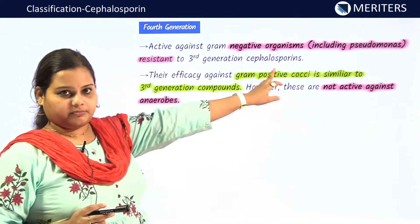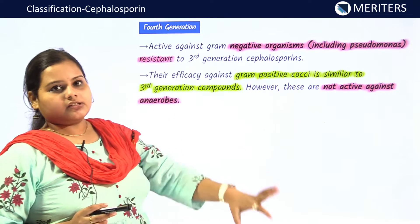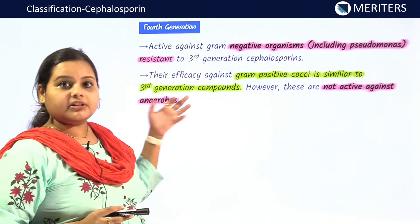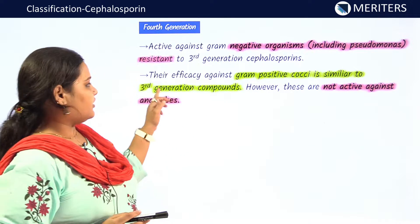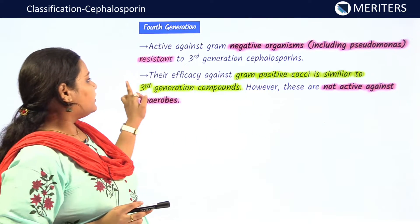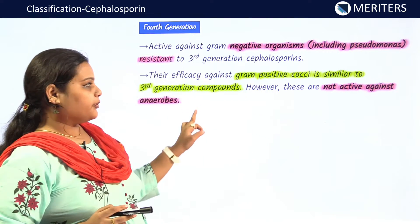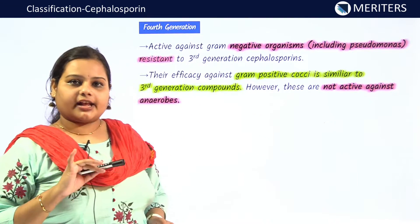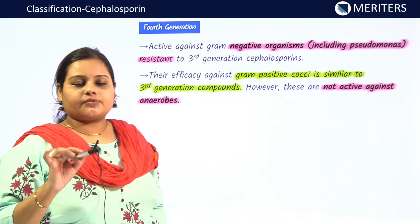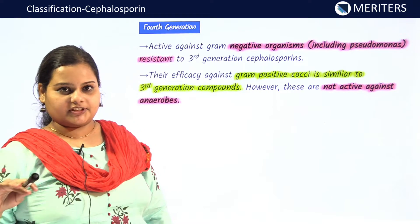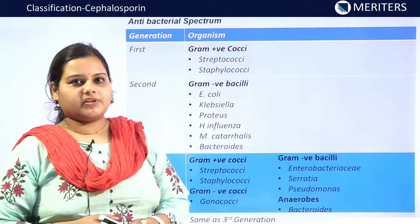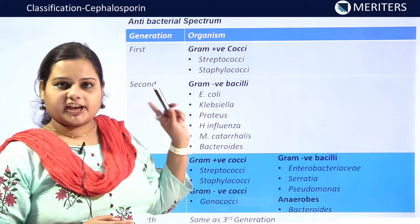Fourth generation cephalosporins are active against gram-negative spectrum including Pseudomonas resistant to third generation. Their efficacy against gram-positive organisms is similar to third generation. However, they are not active against anaerobes, so do not use fourth generation cephalosporins for oral cavity anaerobic infections.